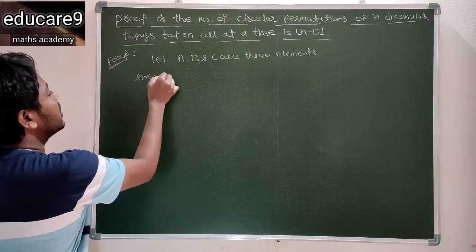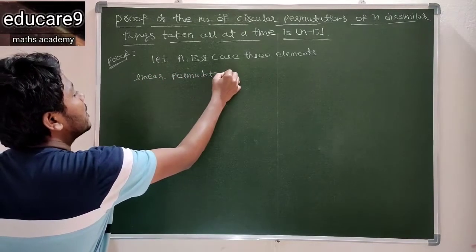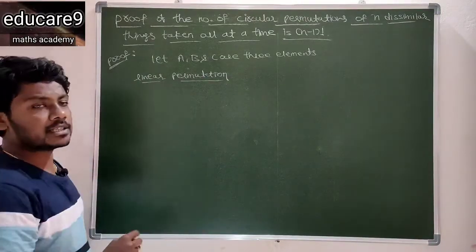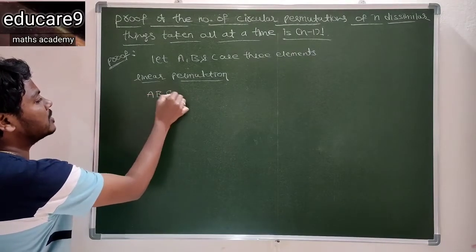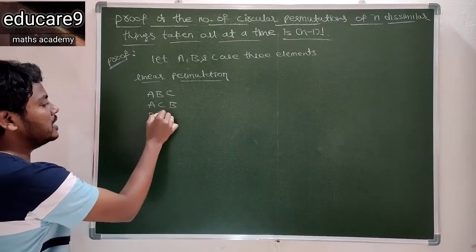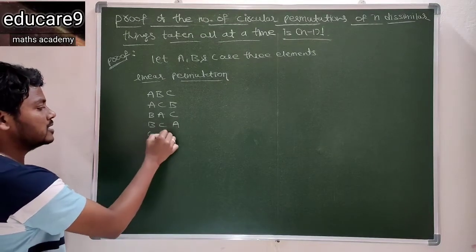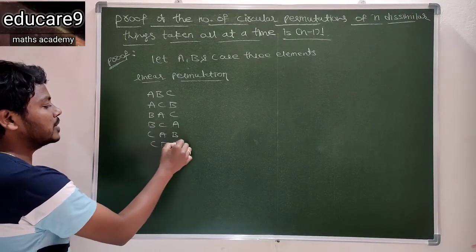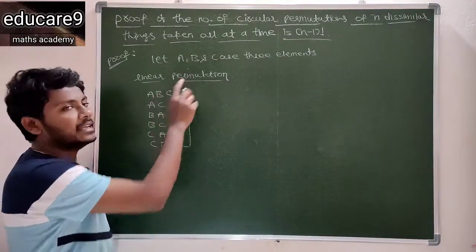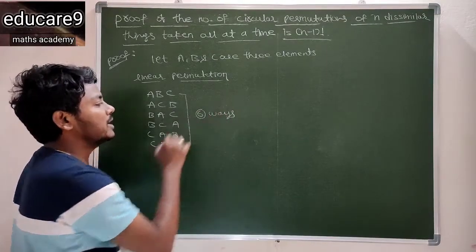First, linear permutation. What are the arrangements in linear permutations? The arrangements are: A, B, C — A, C, B — B, A, C — B, C, A — C, A, B — and C, B, A. Total six arrangements are possible in linear permutations. So total six ways in linear permutations.